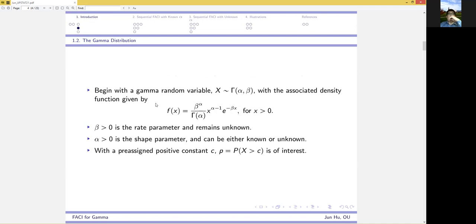We focus on a two-parameter gamma population where beta, the rate parameter, remains unknown, while alpha, the shape parameter, can be either known or unknown. And we will discuss both cases separately.